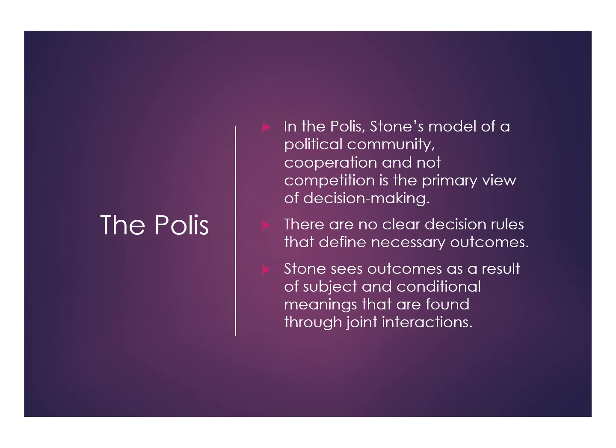The polis, at least in theory, would have some ability to have a democratic system, though if you read Stone carefully, the idea of a democratic system can exist to a greater or lesser extent. There are no clear decision rules that define necessary outcomes in the polis model. In the polis model, we assume that the political community creates, through the inner relationships of the people within it, their system of decision making. We aren't saying if the cost is higher or the benefit is higher we'll make a particular decision. Instead, people will come together through consensus or through power to determine who wins and who loses.